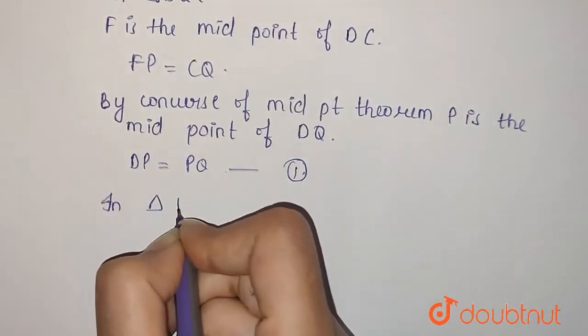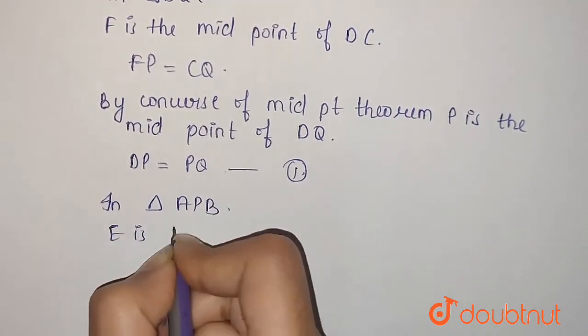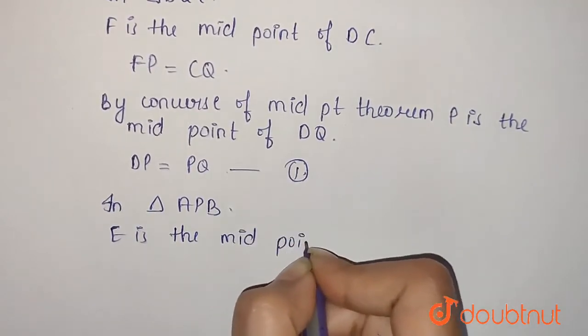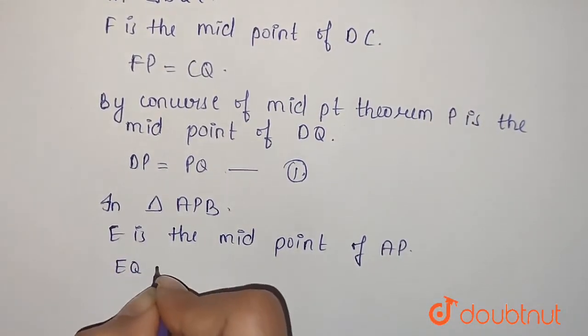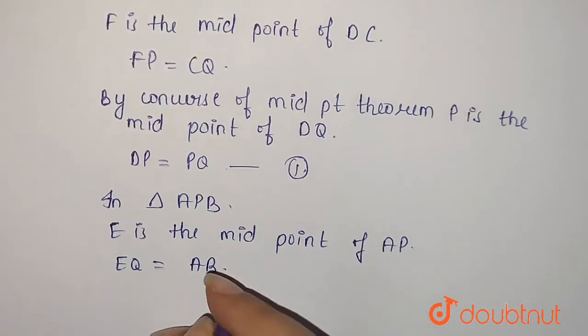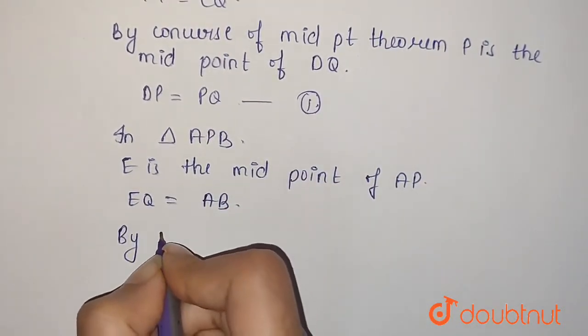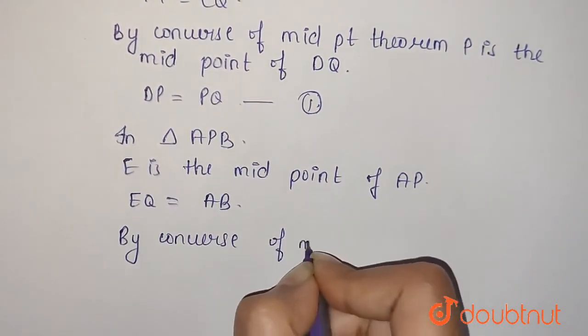Now in triangle APB, E is the midpoint of AB, so EQ is equal to AB. Now by converse of midpoint theorem, Q is the midpoint of PB.